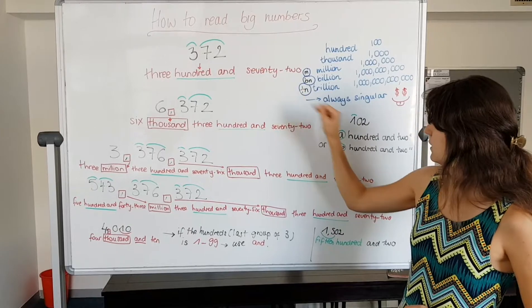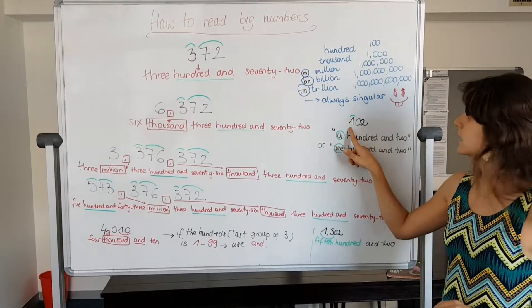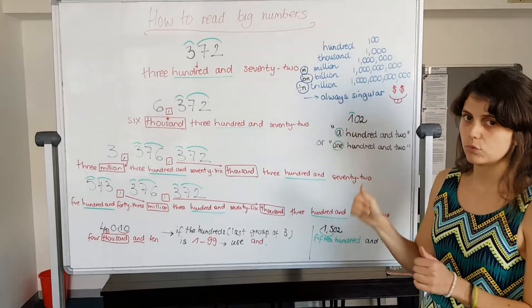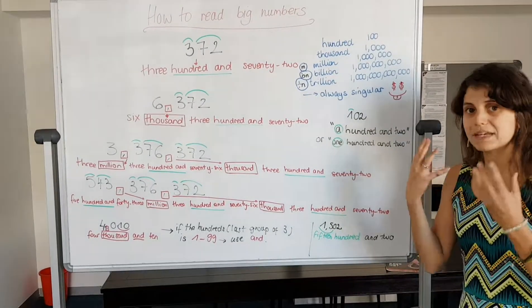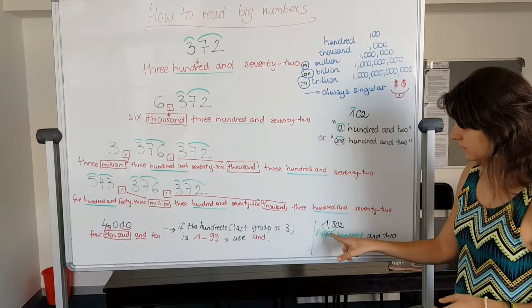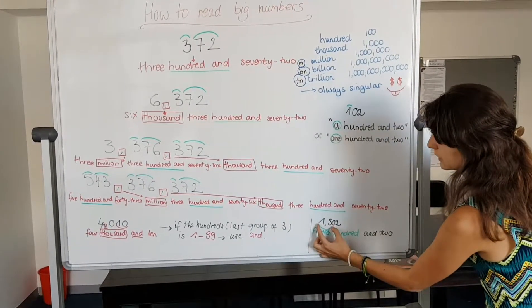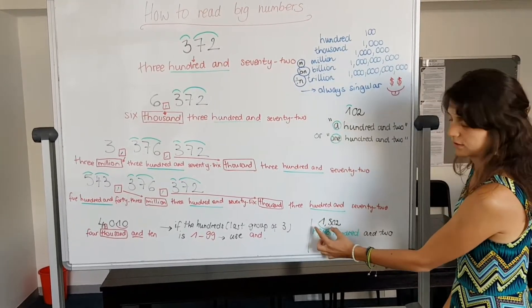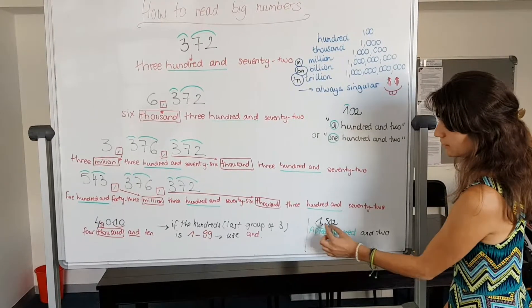Then for those numbers, if it's 102, you can say one oh two or one hundred and two. Both are possible. And finally, you might see or might hear people say this number. You can say one thousand five hundred and two, or you read the first two like this: fifteen, fifteen hundred and two. So fifteen and then hundred and two.